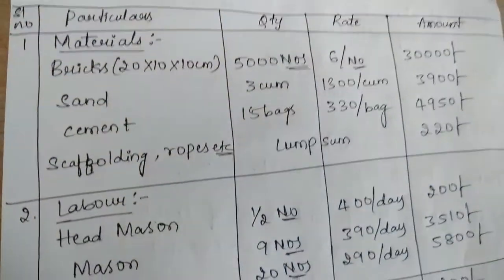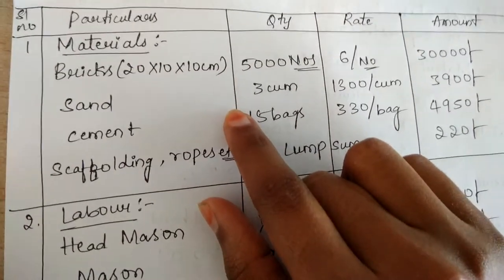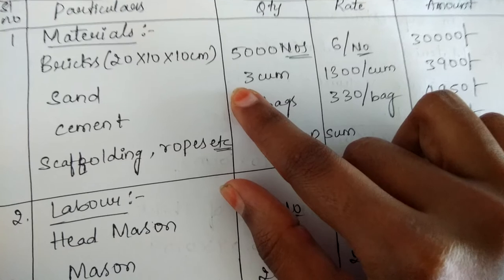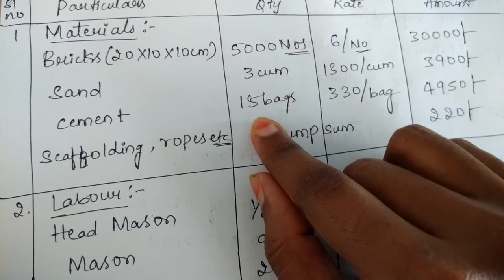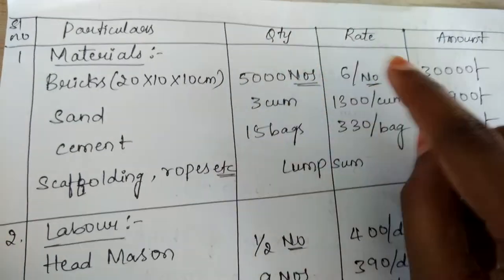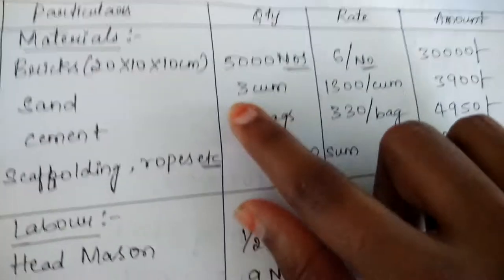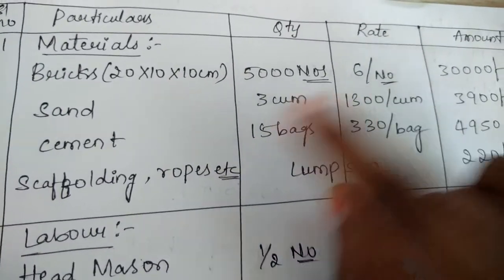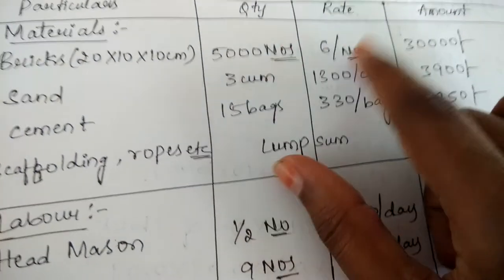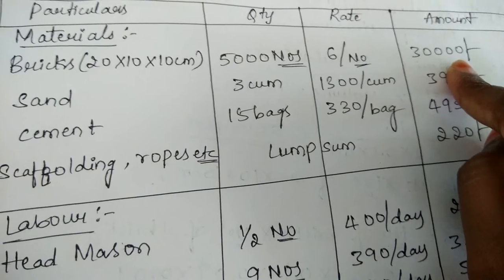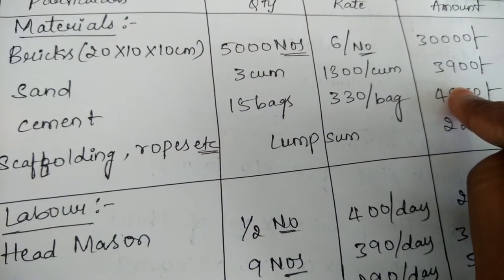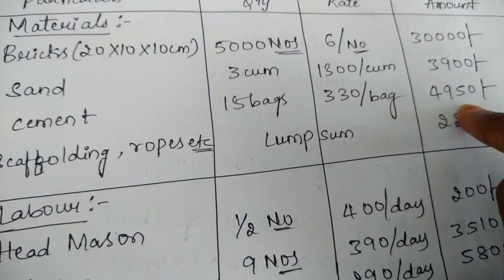The quantities found earlier are: 5000 number of bricks, 3 cubic meter of sand, and 15 bags of cement. The rates for those materials are: bricks at 6 rupees per number, sand at 1300 rupees per cubic meter, cement at 330 rupees per bag. On multiplying quantity with rate: 5000×6 gives 30,000; 3×1300 gives 3,900; 15×330 gives 4,950 rupees.